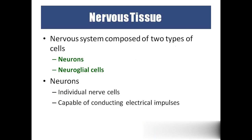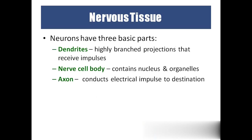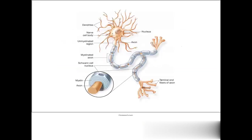The nervous system has two types of cells: neurons and neuroglial cells. Neurons are individual nerve cells capable of conducting electrical impulses. Neurons are divided into three parts: dendrites, which are highly branched projections that receive impulses; cell body (also called cytone or perikaryon); and axon. Some neurons have a myelin sheath — those are called myelinated neurons. Neurons without a myelin sheath are called unmyelinated neurons.